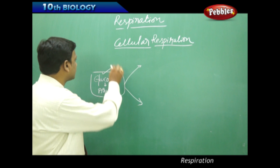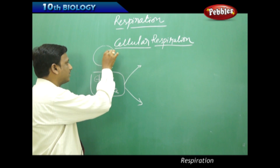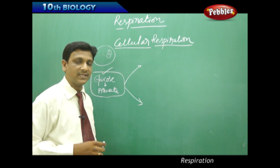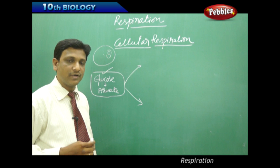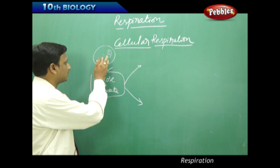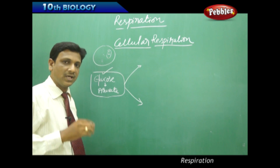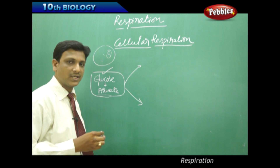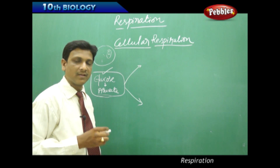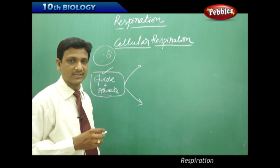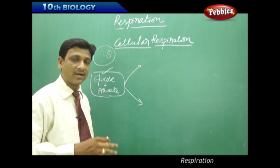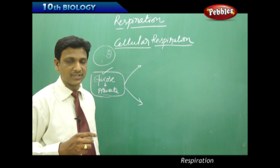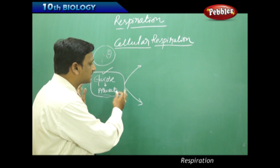The site of cellular respiration inside the cell includes mitochondria and cytoplasm. The first part of cellular respiration takes place in the cytoplasm, where glucose is converted to a substance called pyruvate, or pyruvic acid. This part is called glycolysis, and it is common to both aerobic and anaerobic respiration.